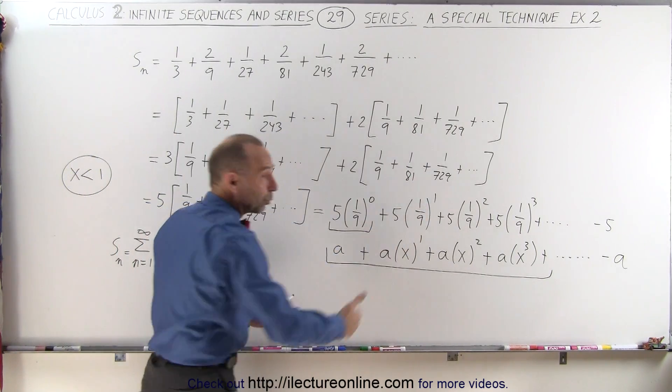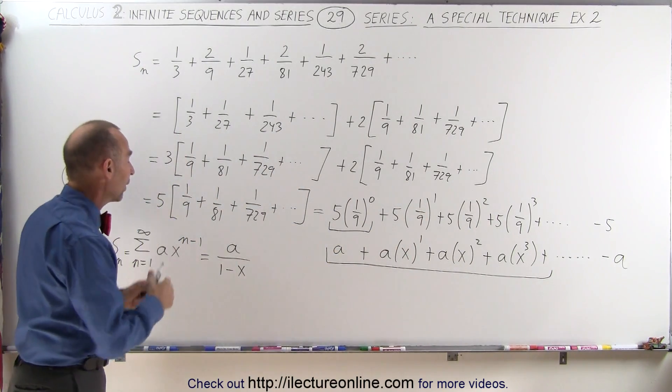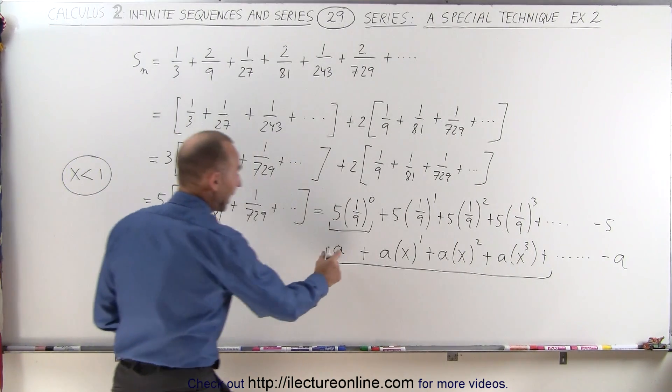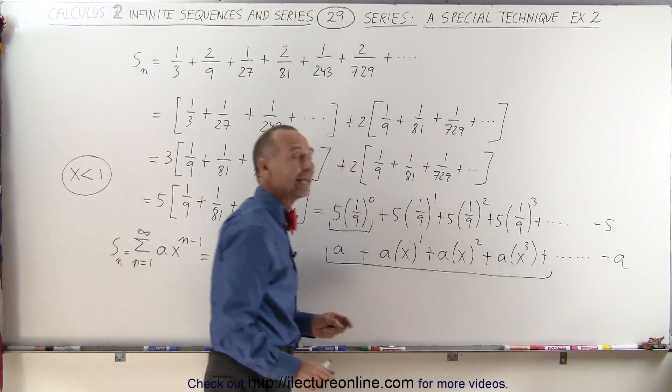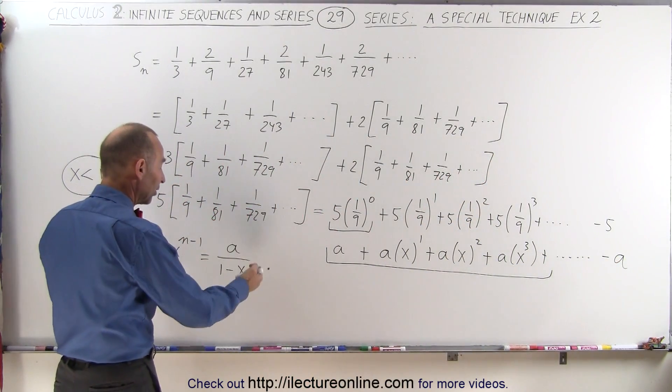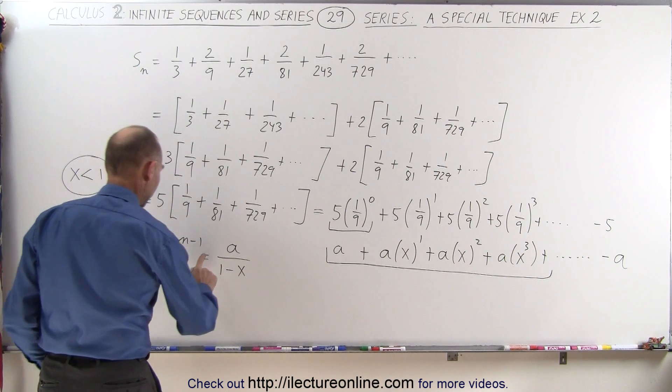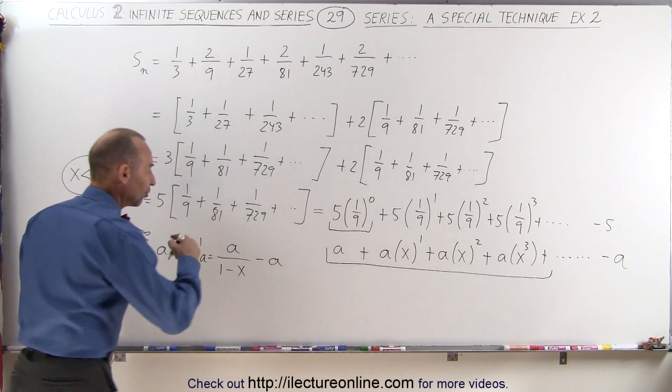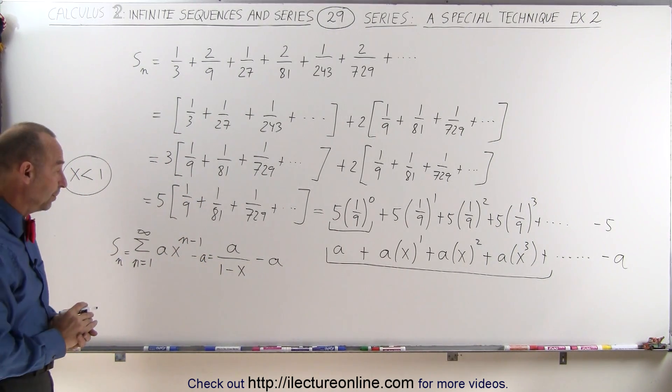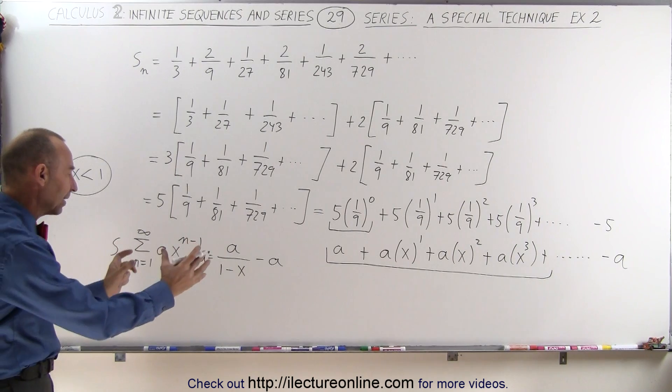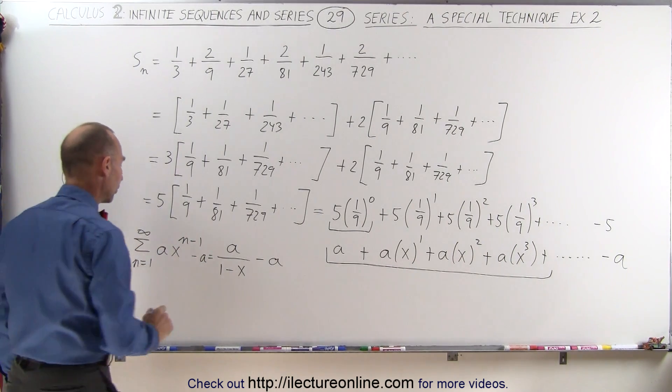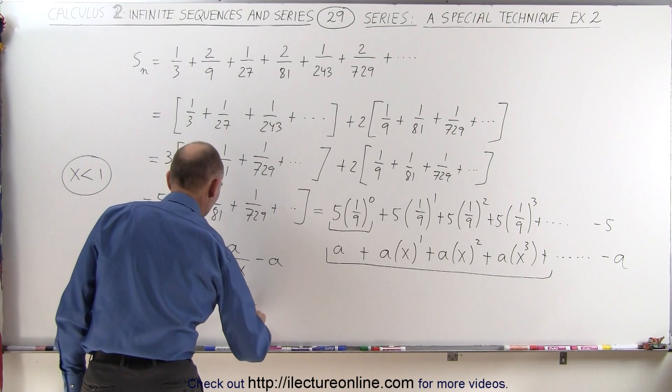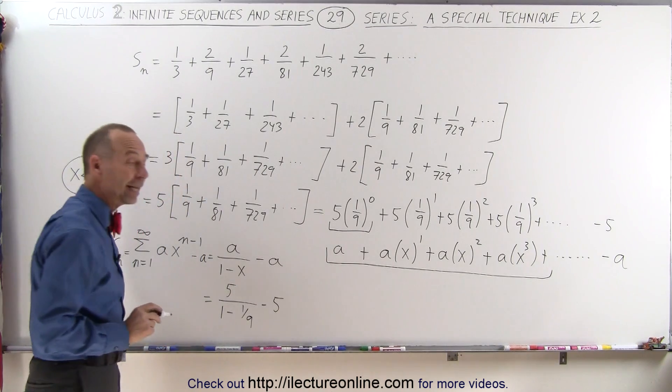And of course you can see that x is 1/9 which is smaller than 1 so we can go ahead and solve this. Now of course remember that we added an a in the beginning and we subtract an a from the end, so we'll have to, once we sum all this up, subtract the a from it because I didn't have the first term. But using that trick I can at least equate it to the geometric series. In other words, this is equal to 5 divided by (1 - 1/9) and of course I have to subtract 5 from the end.